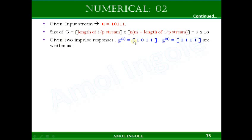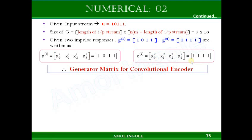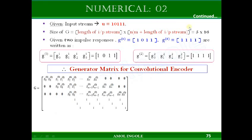Let us see how we can construct the generator matrix. The two impulse responses given are G1 and G2. To construct the first row of the generator matrix, we interlace the generator sequences G1 and G2 in the manner shown.